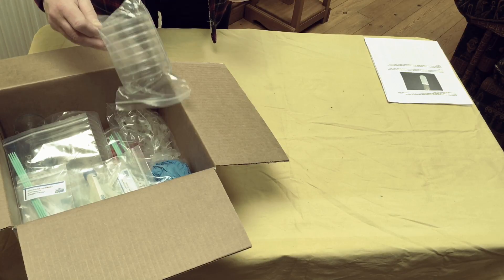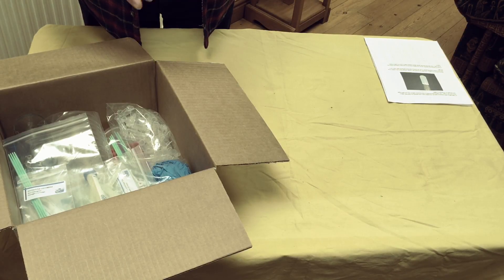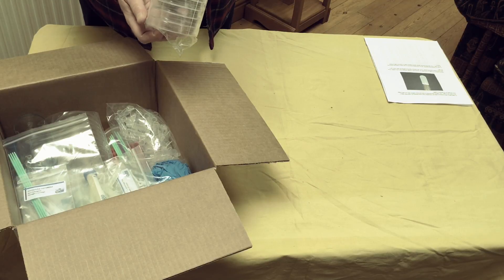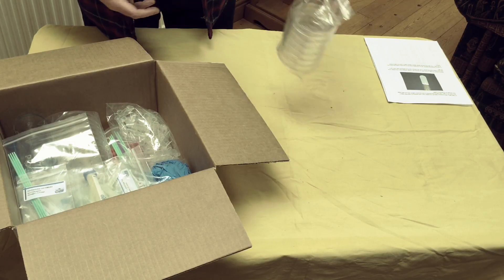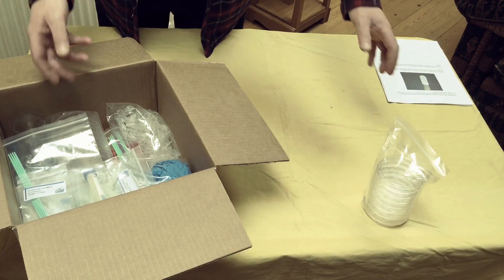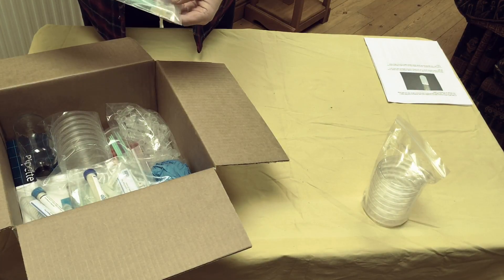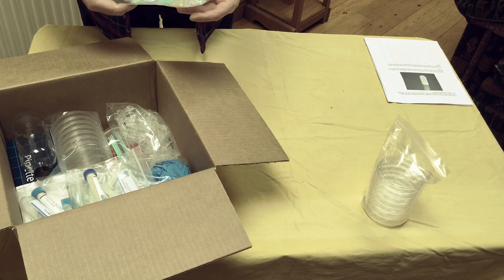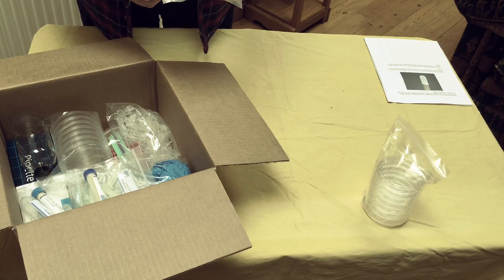Then we've got some petri dishes, although I've learned that they call these petri plates, but with lids on. Some what seem to be kind of stirrers or something. And what's this?